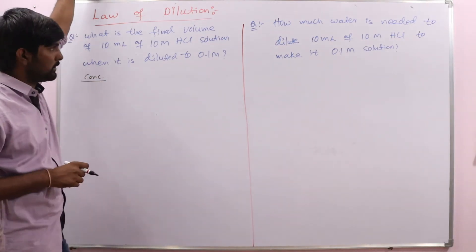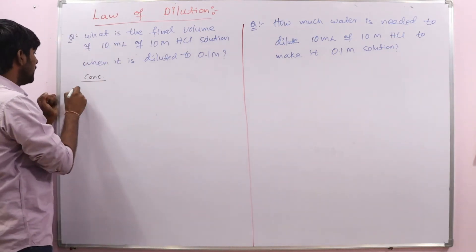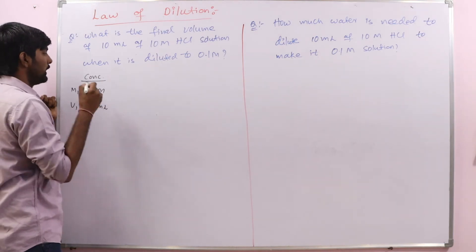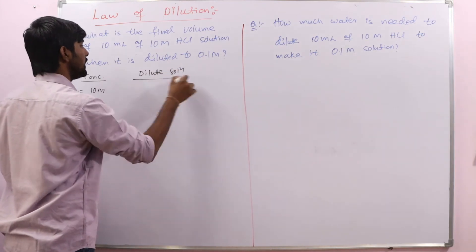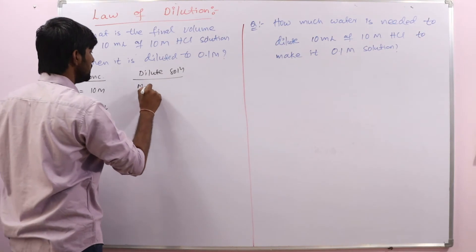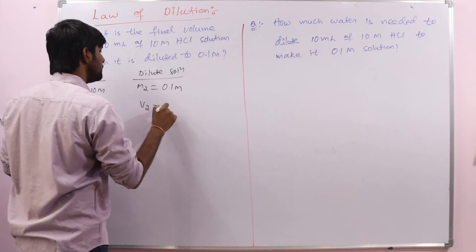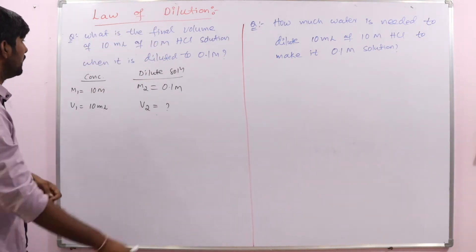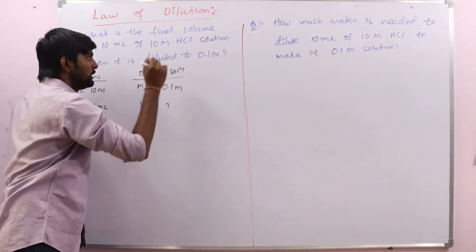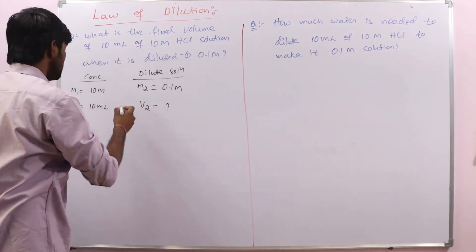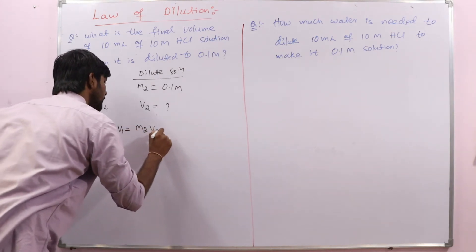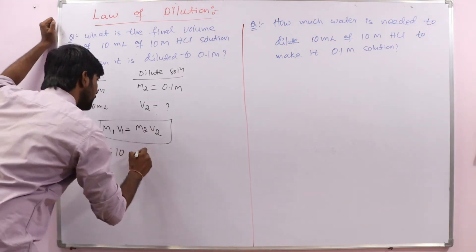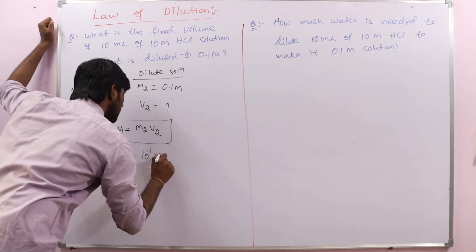The original solution is the concentrated solution. Here, molarity M1 = 10 molar and volume V1 = 10 mL. For the dilute solution, after dilution, the concentration is changed to 0.1 molar, and we need to find the final volume. We use the relation M1V1 = M2V2. Substituting: M1 = 10, V1 = 10, M2 = 0.1 (that is 10⁻¹), and we solve for V2.